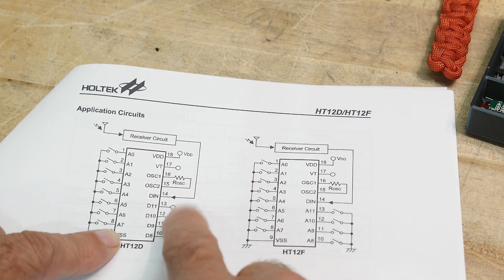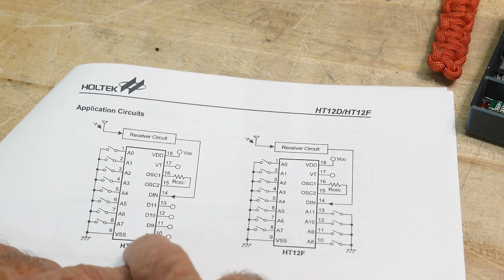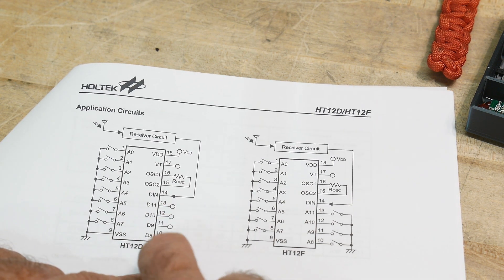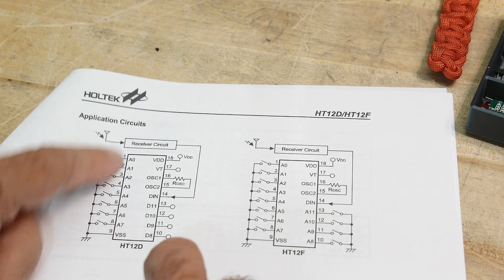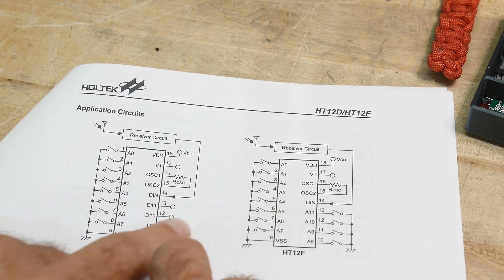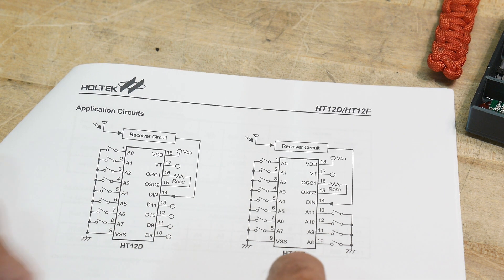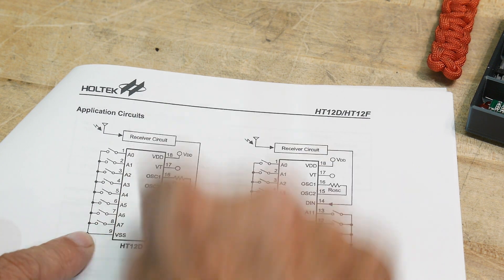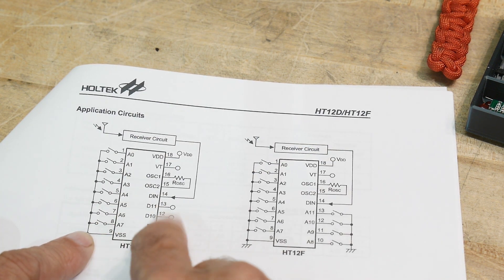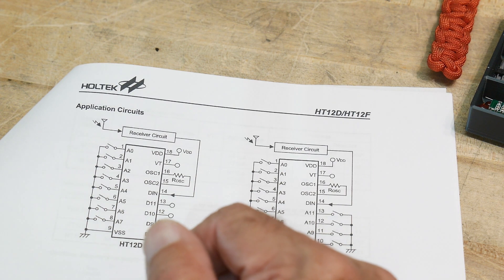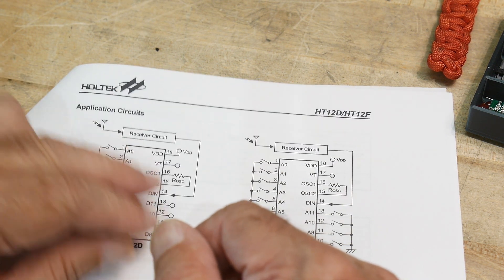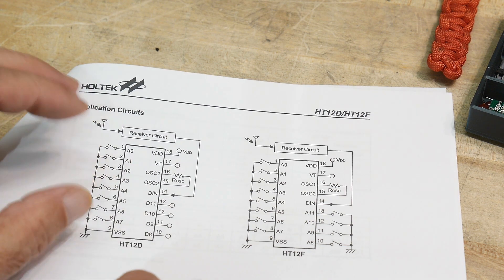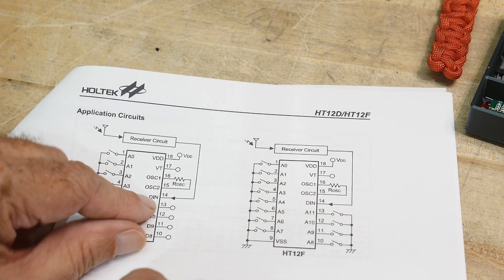You have to transmit the correct code that's set with these switches. And there's an eight bit code. So 256 values of code. And then once that matches, the following four bits are output here, D8, D9, D10, or D11. So it's a 12 bit string of serial data. And if this matches, then it'll latch that data here at the output. So basically you have eight bits of address and four bits of data.